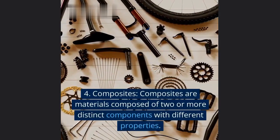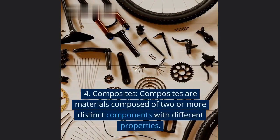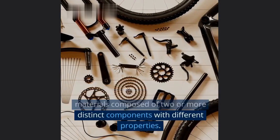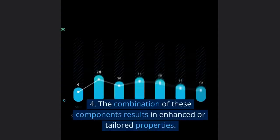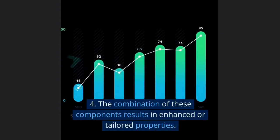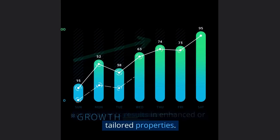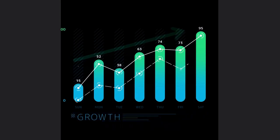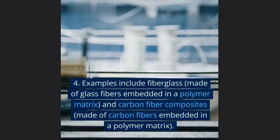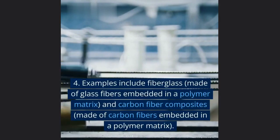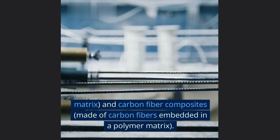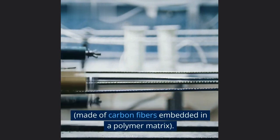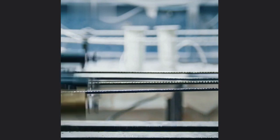Composites are materials composed of two or more distinct components with different properties. The combination of these components results in enhanced or tailored properties. Examples include fiberglass, made of glass fibers embedded in a polymer matrix, and carbon fiber composites, made of carbon fibers embedded in a polymer matrix.